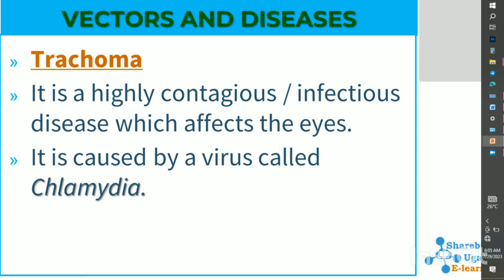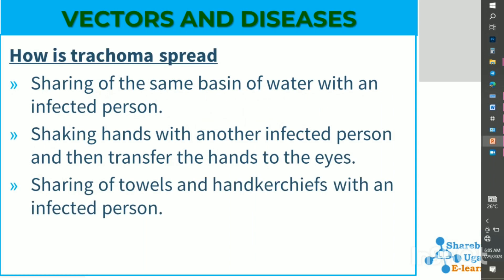Trachoma is caused by a virus called Chlamydia. It is spread through sharing the same basin of water with an infected person, shaking hands with a person infected with trachoma, and then transferring the hands to the eyes or other soft parts like the ears, nose, and mouth.